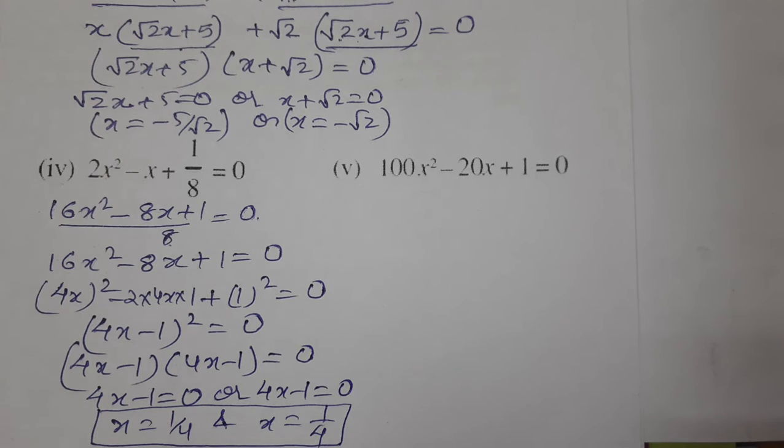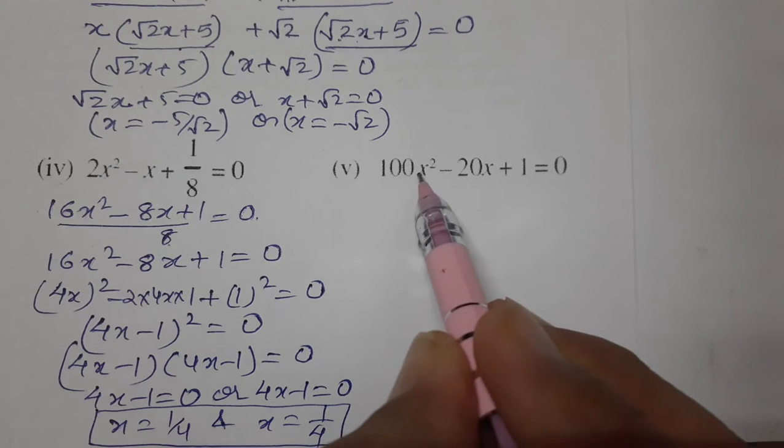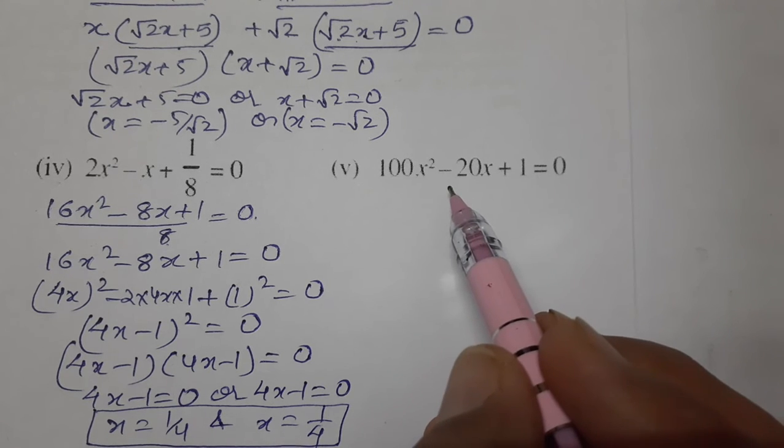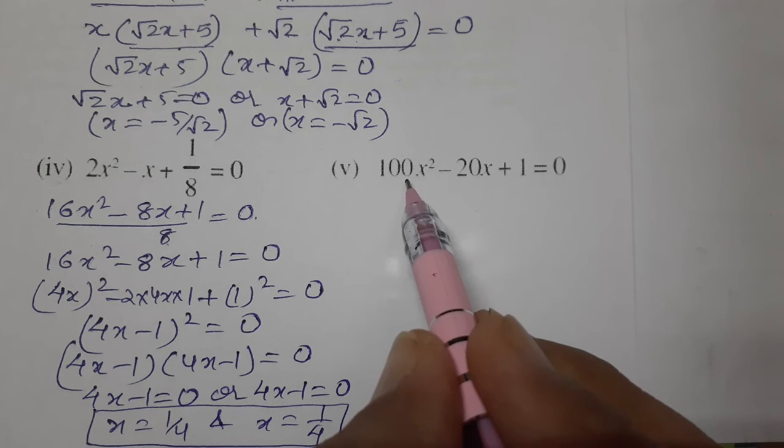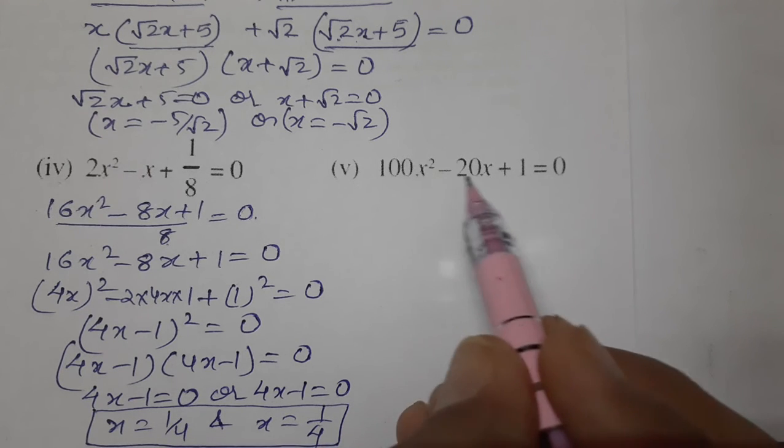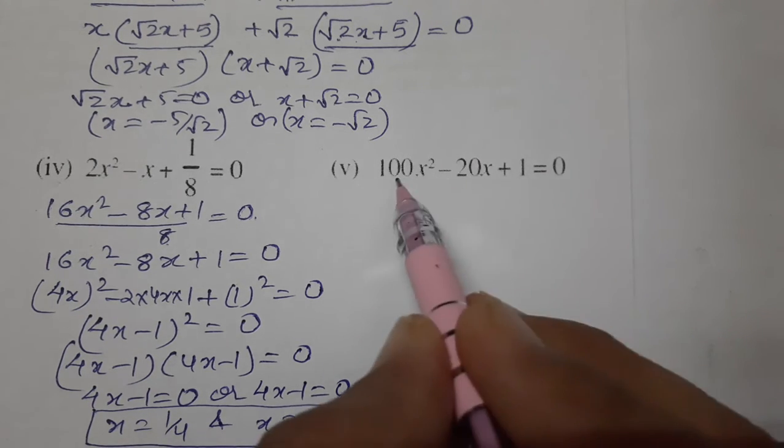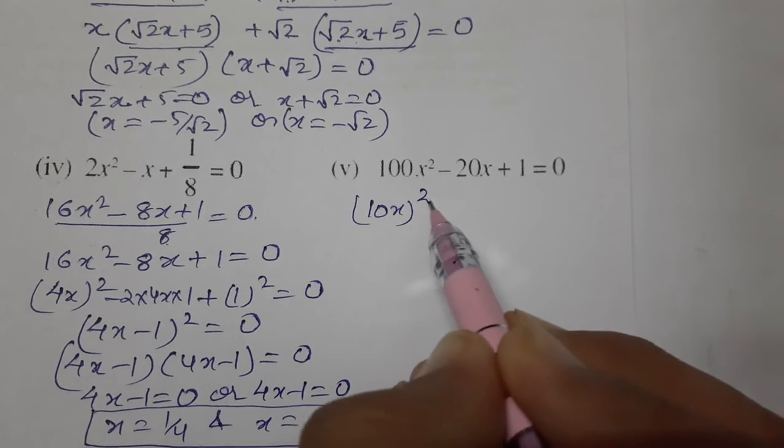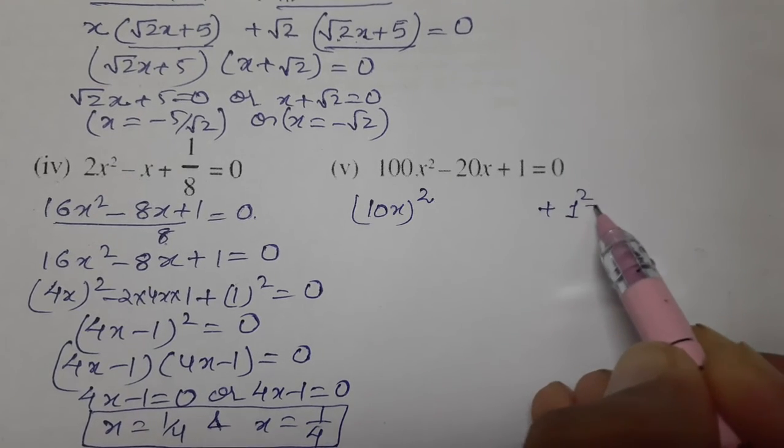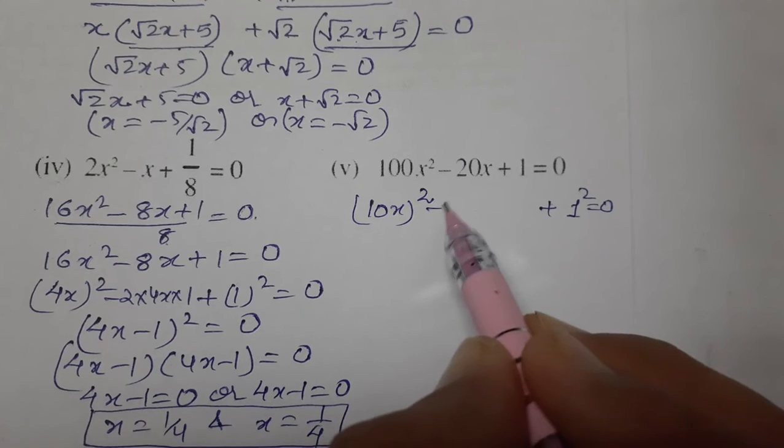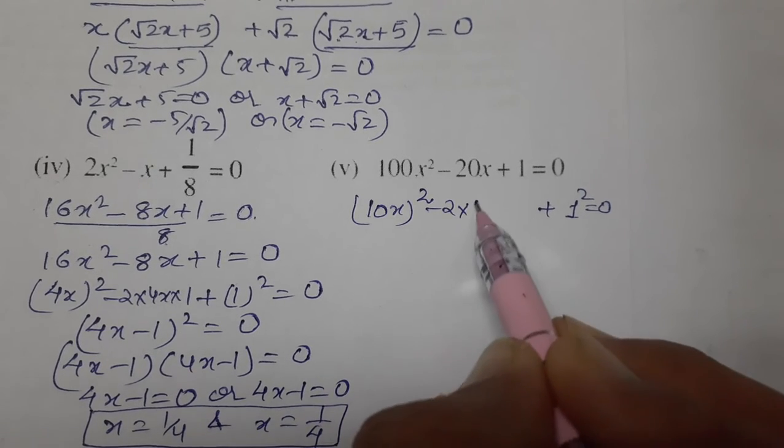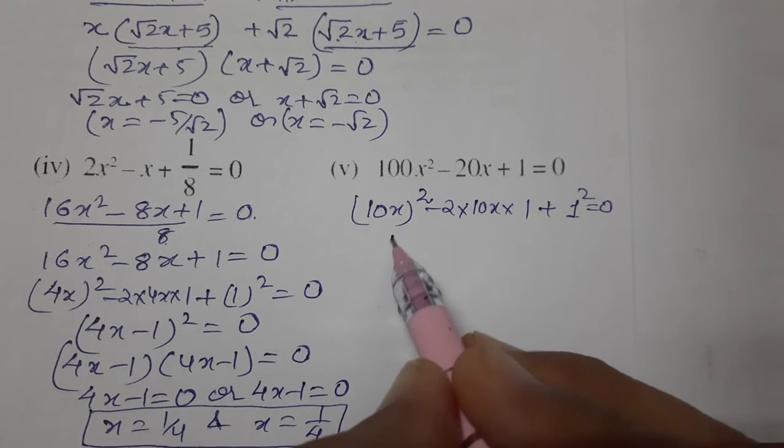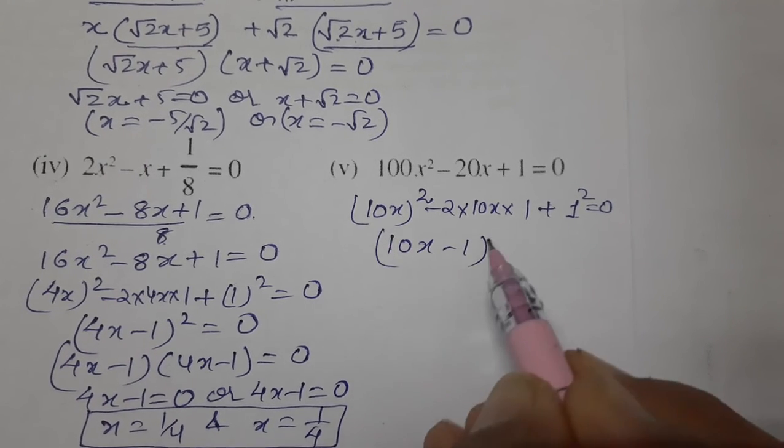Now the last one, fifth question: 100x² - 20x + 1 = 0. We can do middle term split or apply an identity. 100x² can be written as (10x)², and this is 1² with -2 × 10x × 1. This is the identity (a - b)², where a = 10x and b = 1.